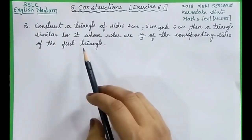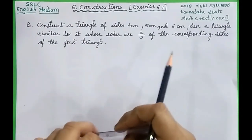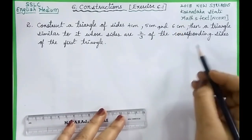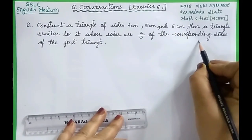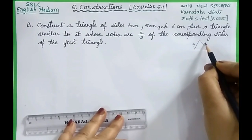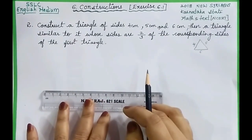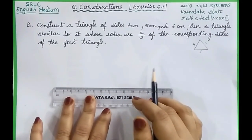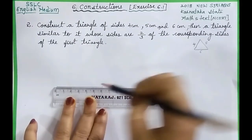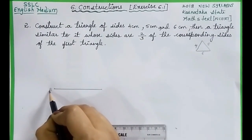Dear students, first we have to construct a triangle whose sides are 4, 5, and 6 centimeters respectively. I will draw here the rough diagram — this is a triangle with sides 4 centimeter, 5 centimeter, and 6 centimeter. Now let us draw the triangle. The base is 6 centimeter, so draw a line of 6 centimeter and name it as BC.